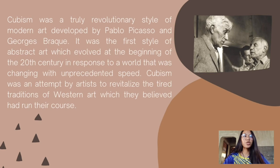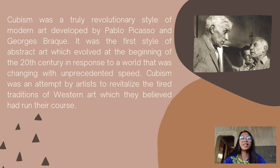Cubism was a truly revolutionary style of modern art developed by Pablo Picasso and Georges Braque. It was the first style of abstract art, which evolved at the beginning of the 20th century in response to a world that was changing with unprecedented speed. Cubism was an attempt by artists to revitalize the tradition of Western art, which they believed had run its course. It rejected the idea of using perspective to create art as seen in nature — it was geometric and two-dimensional, and objects were broken apart so the pieces could be viewed from all sides.